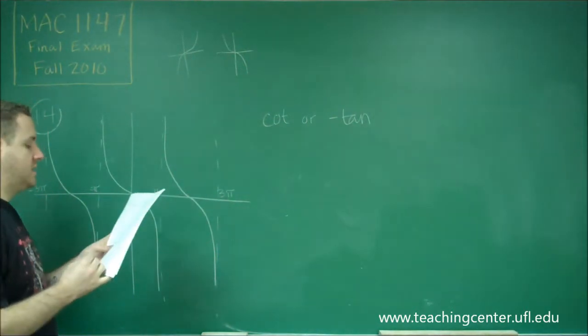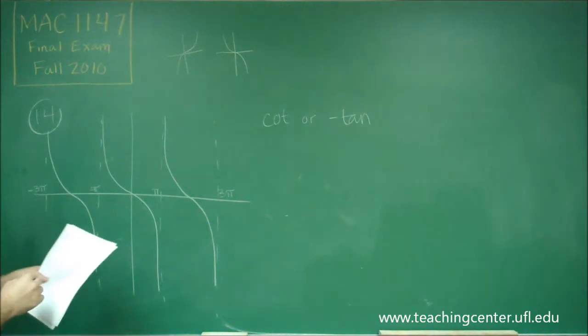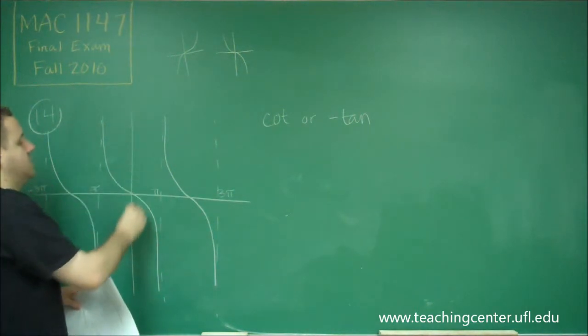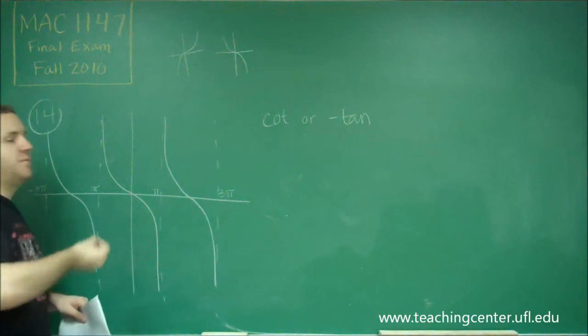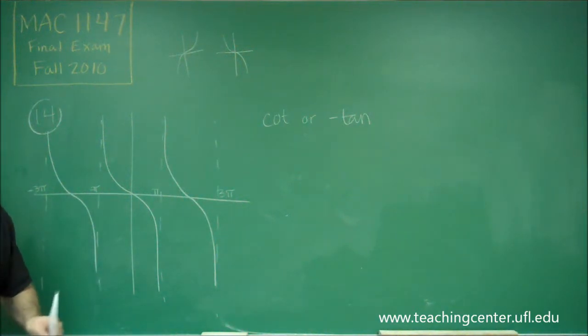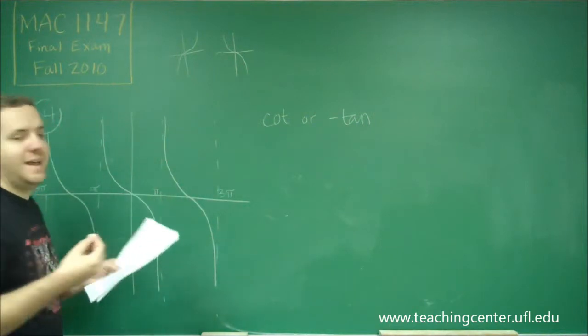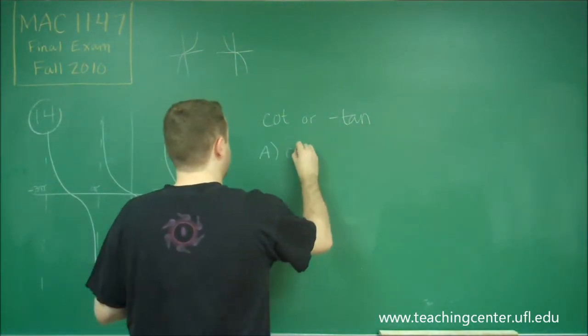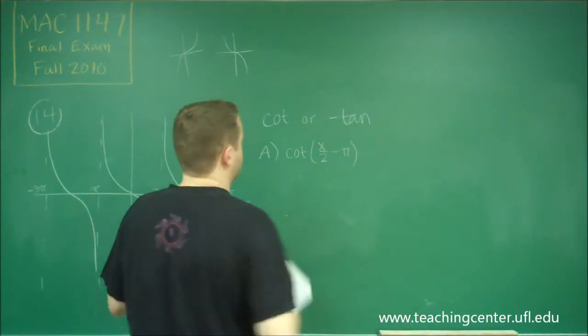Let's think about what it would mean if it was either of those things. Now if it was cotangent, cotangent normally starts off with an asymptote at zero. So this has been shifted if this is in fact a cotangent graph. Let's look at answer choice A. Answer choice A says we have cotangent of x/2 minus π.